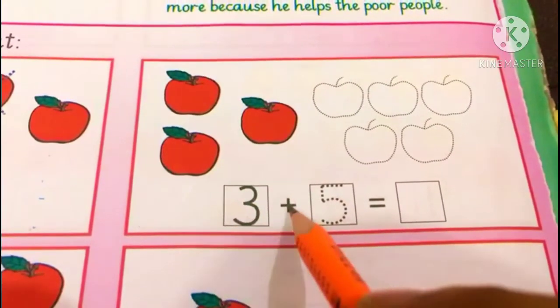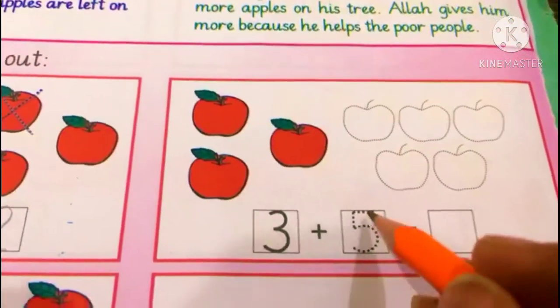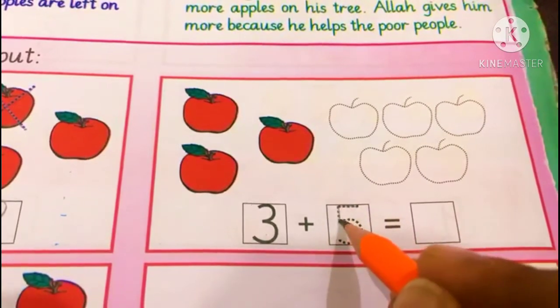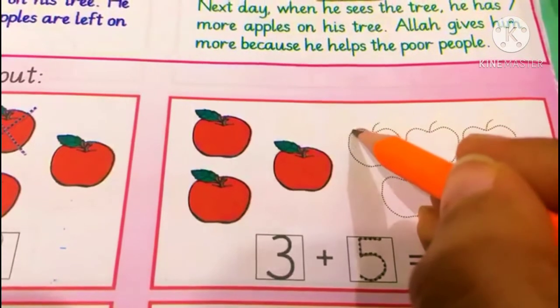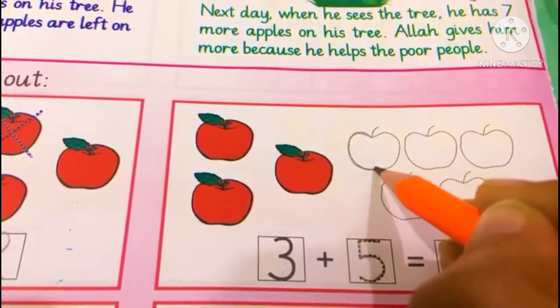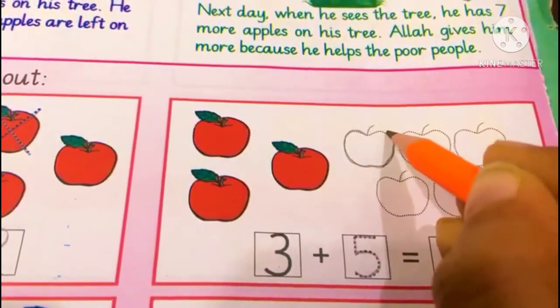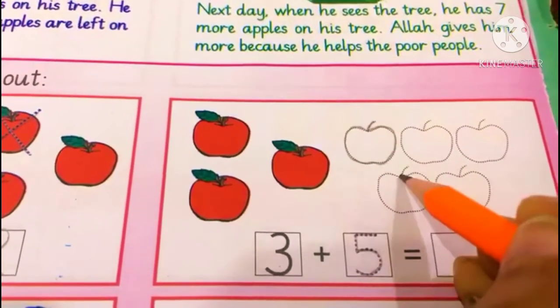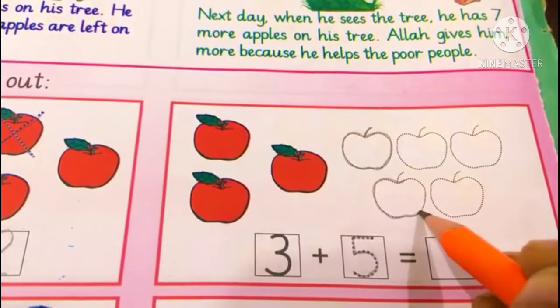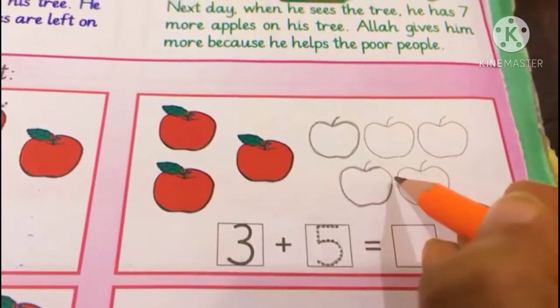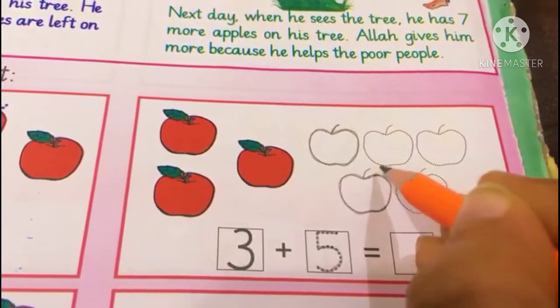3. 1, 2, 3. Plus means we have to add 5 more. How many we are going to add? 5. We are going to draw 5 apples. Trace these apples. 1, trace them properly. 2. First one is done for you. Rest of them you will do yourself.